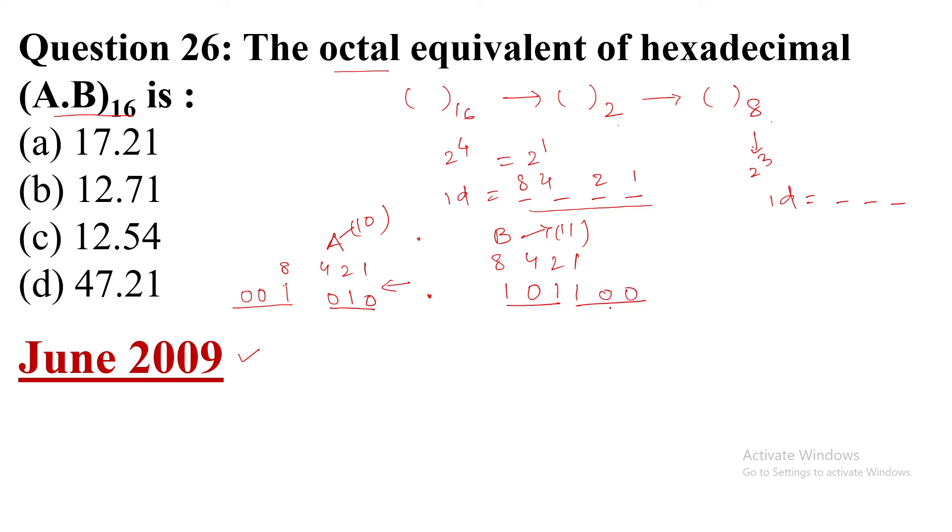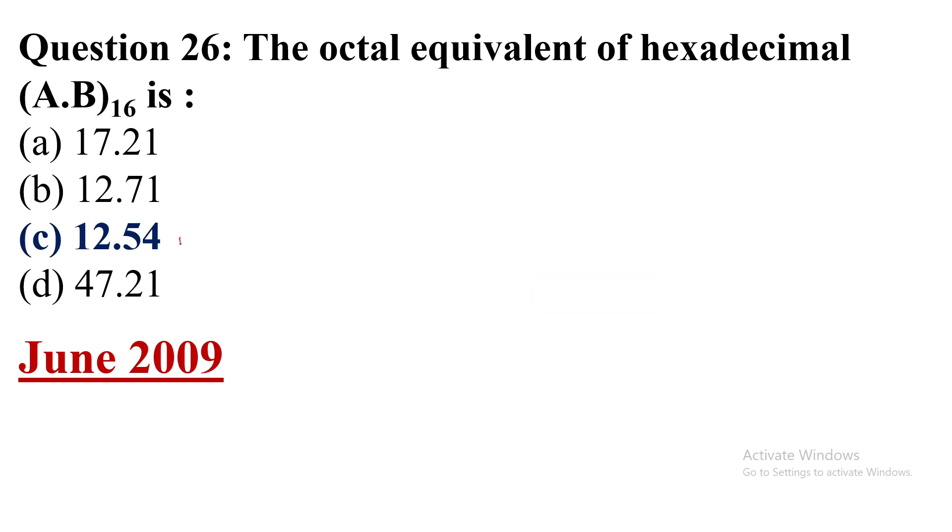Now this is 4, 2, 1 for each group because of the 3-bit representation. This will be 2, this will be 1, and this is 4 plus 1 which is 5, and this is only 4. So 12.54. 12.54 is given in option C, so the correct answer to this question is option C. Thank you very much for watching this video.